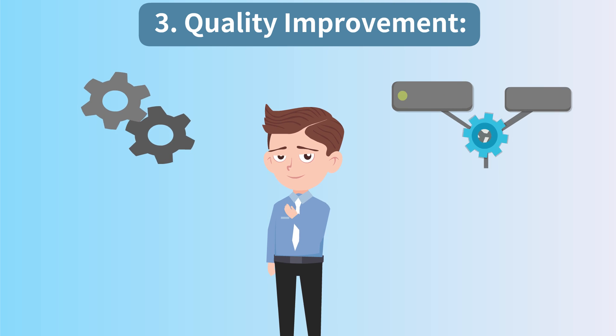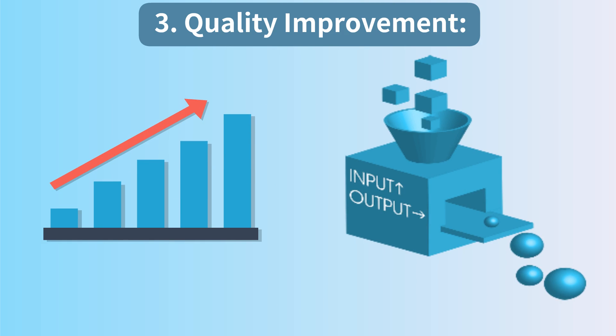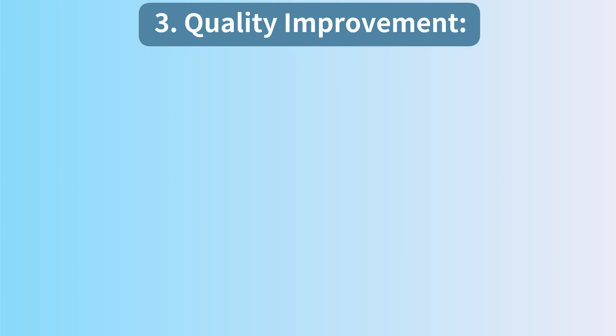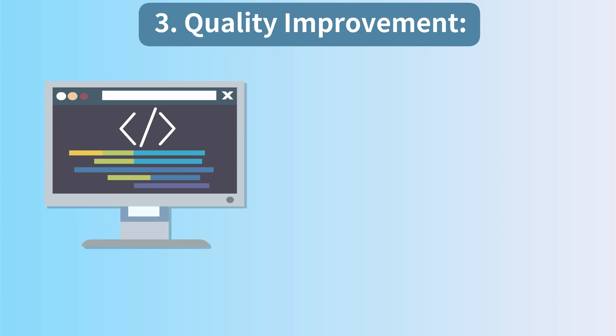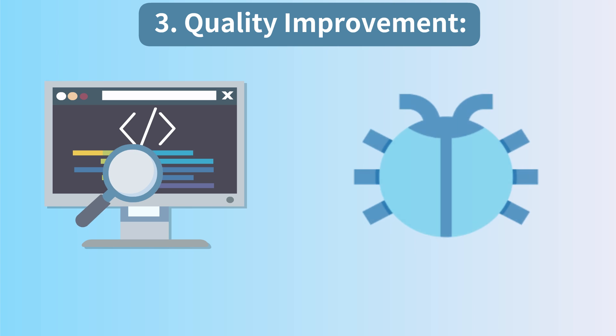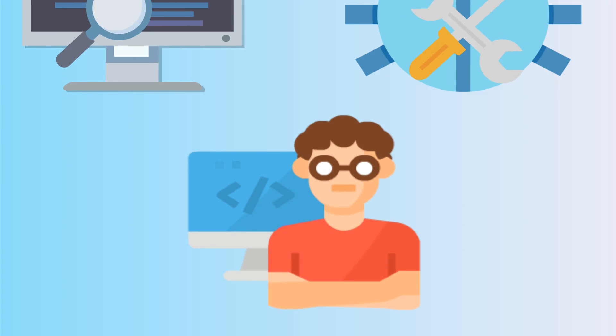Number three: Quality improvement. Understanding a system's components and processes enables us to enhance the quality of its output. For instance, in software development, system analysis can help identify and fix bugs, resulting in more reliable software.